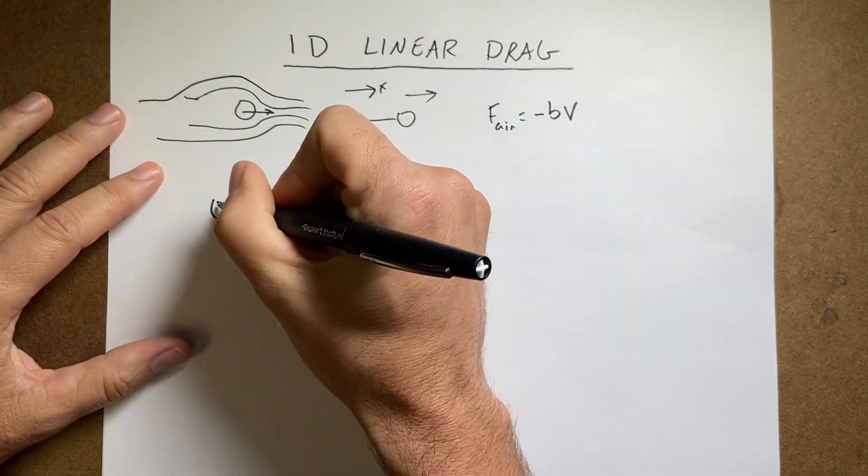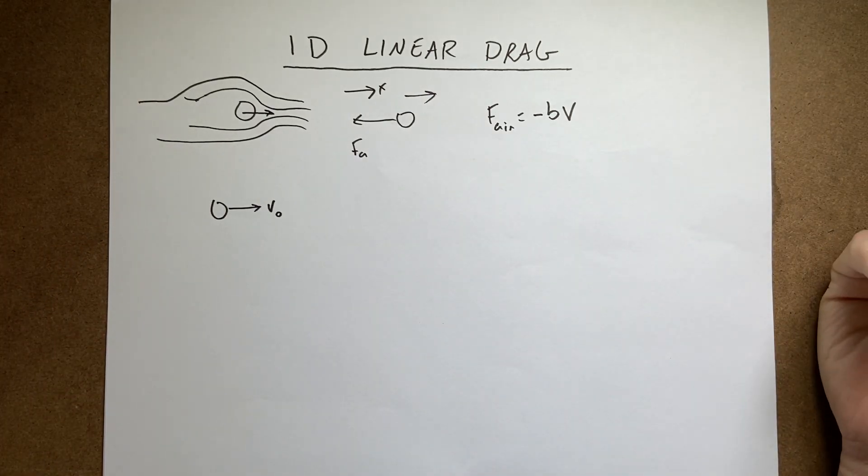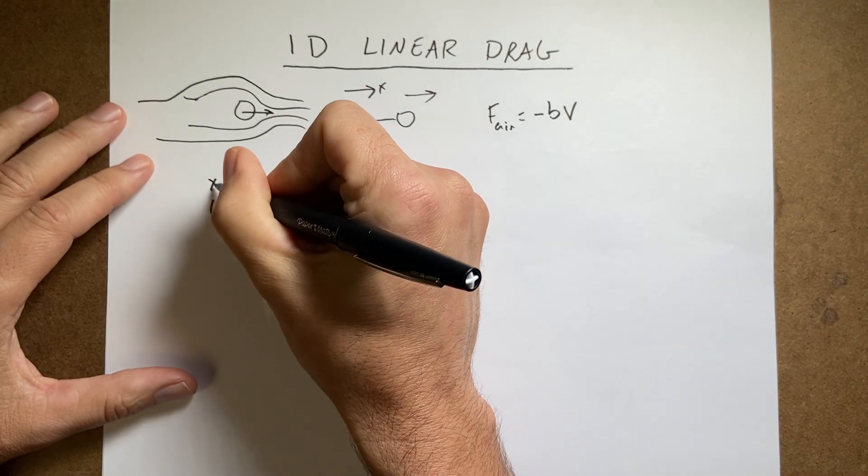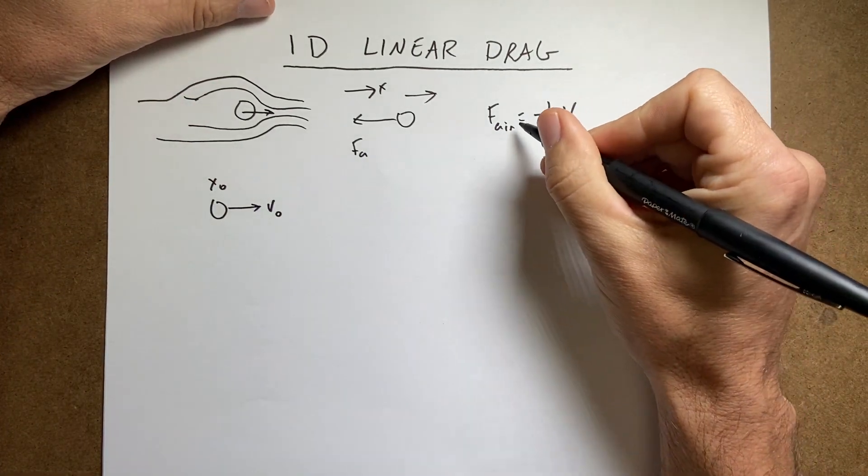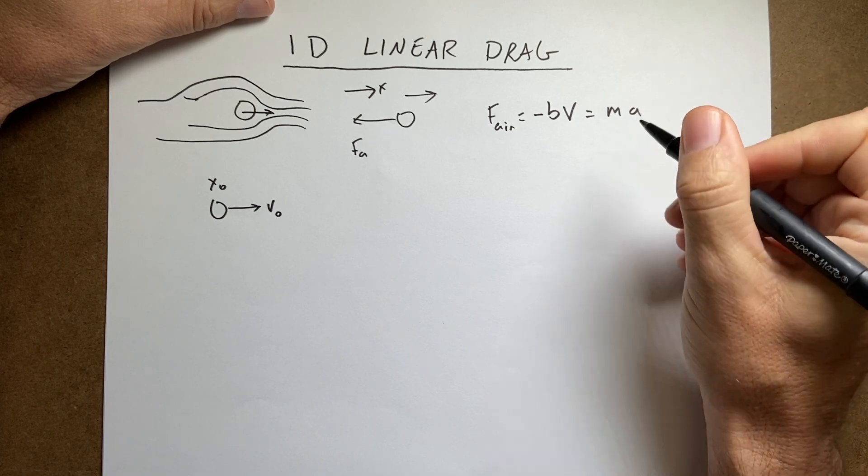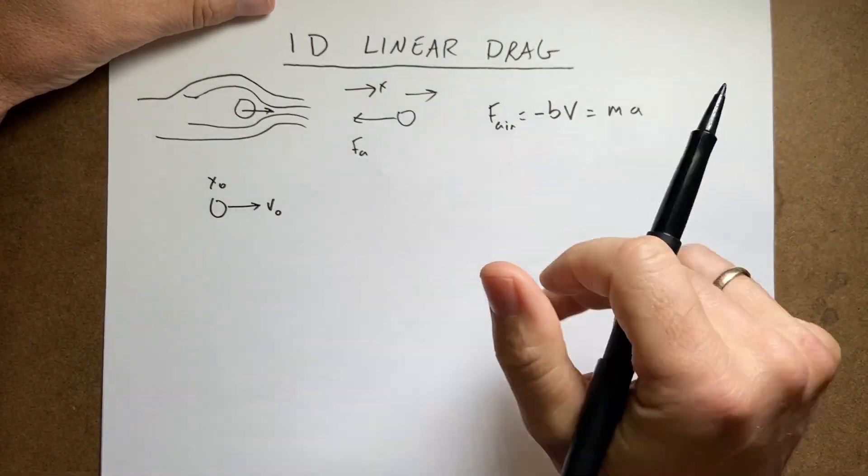Suppose I have my ball and it starts with an initial velocity V0, where is it going to end up? And at position X0. So let's do this. This is equal to MA, the net force. It's the only force acting on it. In this case, it's horizontal and that's the only force acting on it.